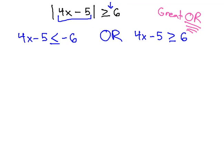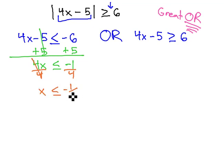Now, we simply have to solve this compound inequality like we've solved any other compound inequality. We can do this by adding 5 to both sides, giving us 4x is less than or equal to negative 1, and finally dividing by 4, which will give us x is less than or equal to negative 1 fourth.